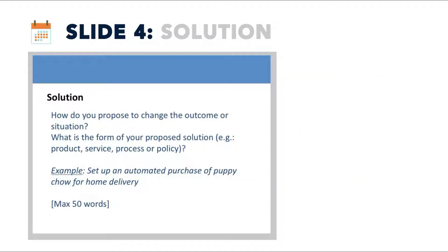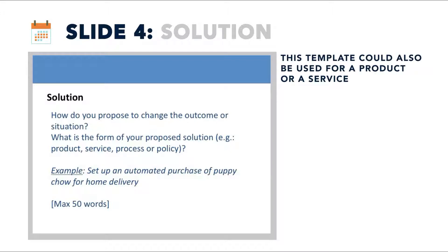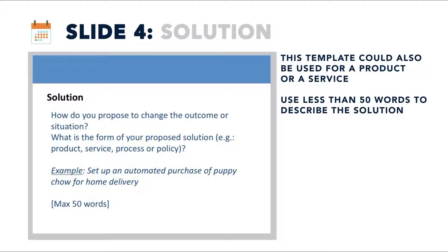Next is the solution. How do you propose to change the outcome or situation that exists now? What is the form of your proposed solution? Is it a product or service? A process? Or a policy? The example here is an automated purchase of puppy chow for home delivery. Remember to keep this concise.